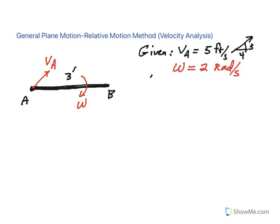We should be able to then find velocity of any point on the body, say velocity of B. So how do we do this? So this is what I want to show you. This is called the relative motion analysis.